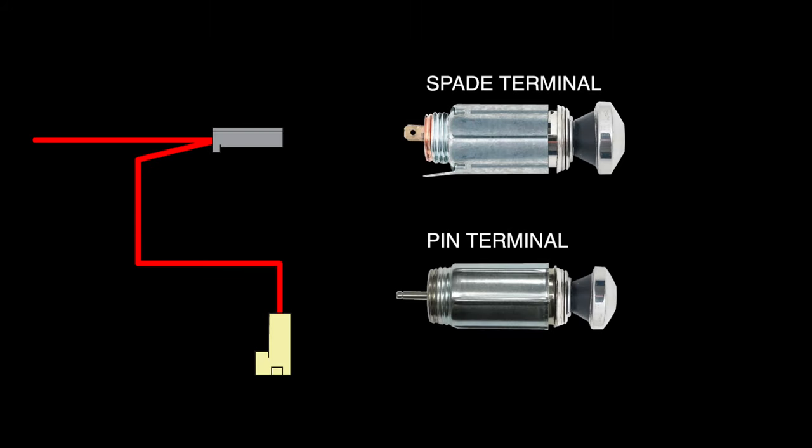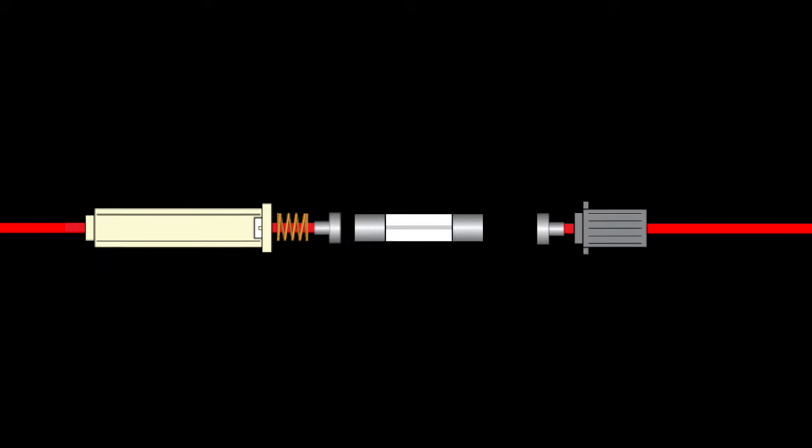The kit contains a pre-built pigtail with connectors for either spade or pin terminal lighters, as well as a 10 amp glass fuse to make this a period correct style modification.